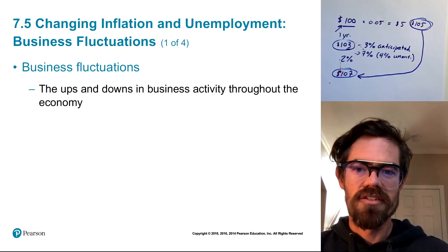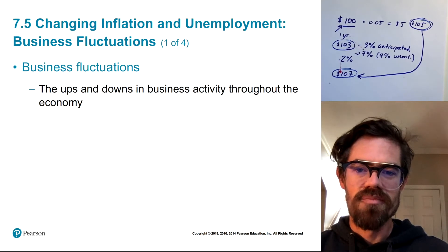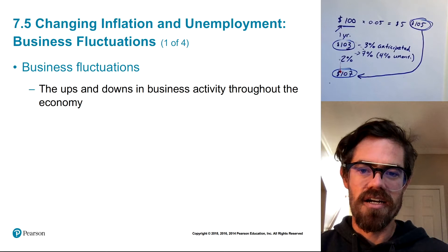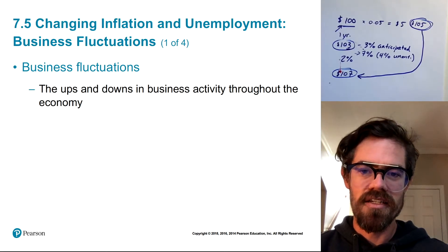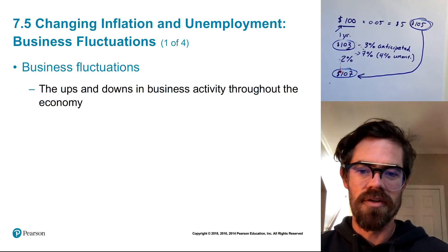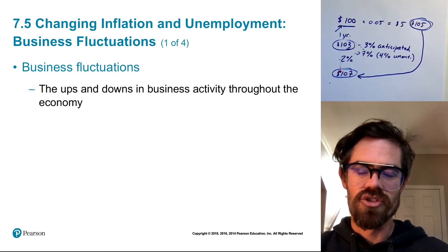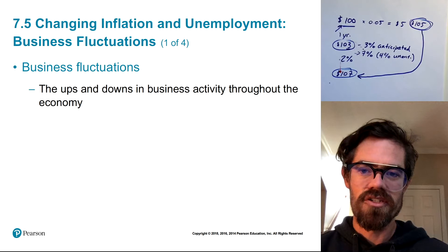In this last section, we're going to talk about changing inflation and unemployment and how it relates to business fluctuations or business cycles. Business fluctuations or business cycles are simply the ups and downs the economy experiences throughout its economic activity, usually in the short run. Our economy is going up and going down, fluctuating around a long-term trend. These are referred to as business fluctuations or business cycles.